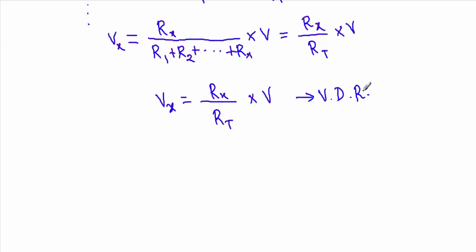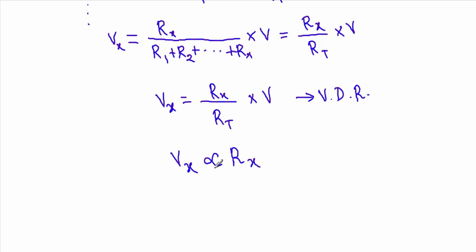From this we can conclude that the amount of voltage drop across a resistor is directly proportional to the value of that resistor. This is another statement of the voltage divider rule. Since the total resistance RT and supply voltage V are constant in the circuit, the more the resistance, the more the voltage drop — or the more voltage will be absorbed across that resistor in a series circuit.